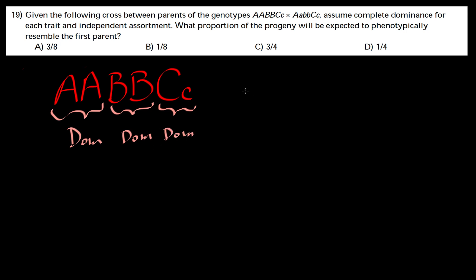We want progeny with all A, B, C dominance. We're going to cross the second parent, which is heterozygous for A, homozygous recessive for B, and heterozygous for C. You could do it separately—cross the A's together.